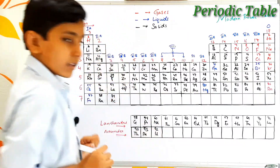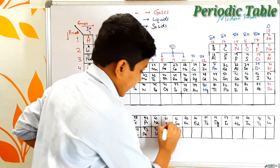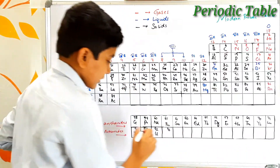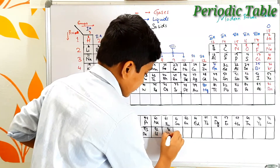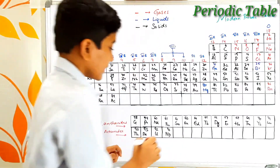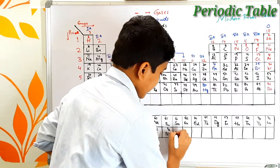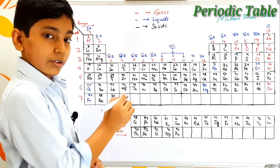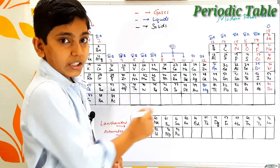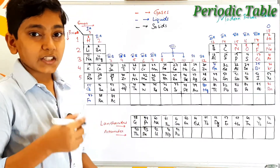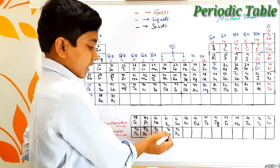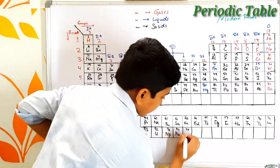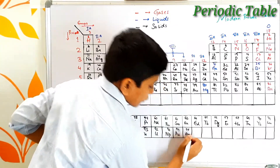Atomic number 93 is neptunium. After neptunium we find plutonium — its symbol is Pu and its atomic number is 94. Uranium, neptunium, and plutonium are three elements named after the planets Uranus, Neptune, and Pluto. Atomic number 95 is americium — its symbol is Am.